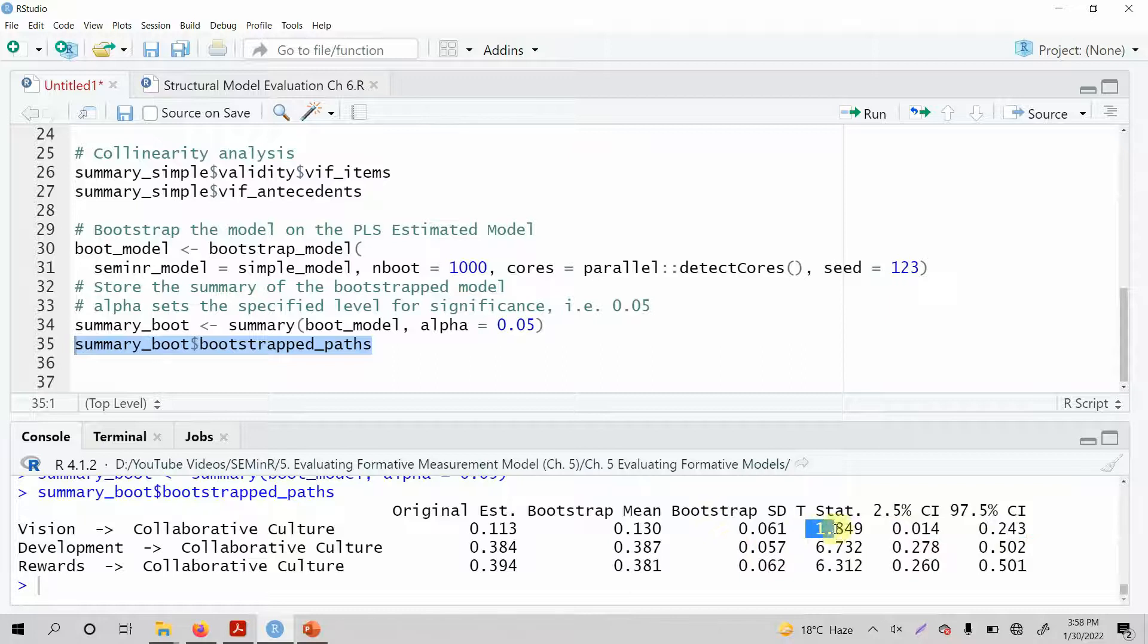Look at this t statistic. Although this is less than 1.96, we can say it is to a certain extent significant. Now this is quite significant. The t value is high. There is no zero in between. This shows that the impact of development on collaborative culture and rewards on collaborative culture are both significant, and this can be referred to as partially significant as well.